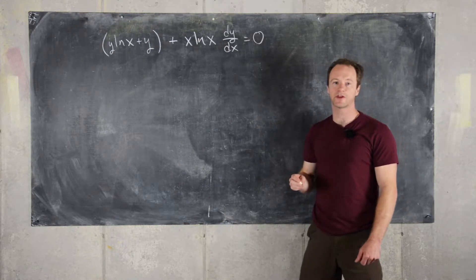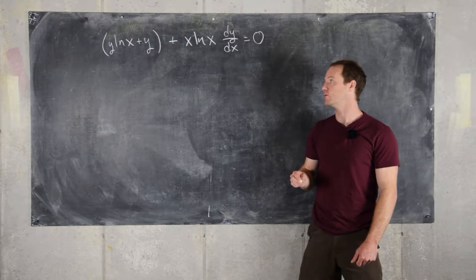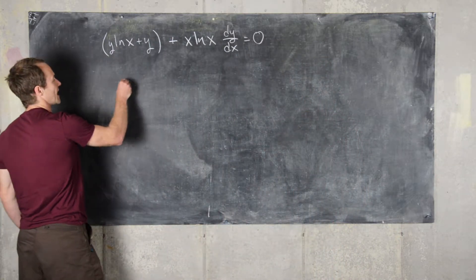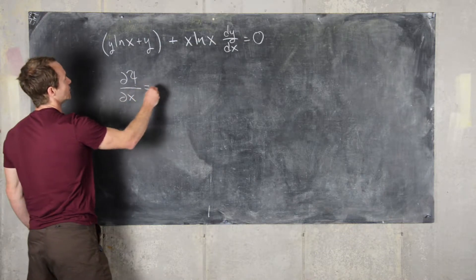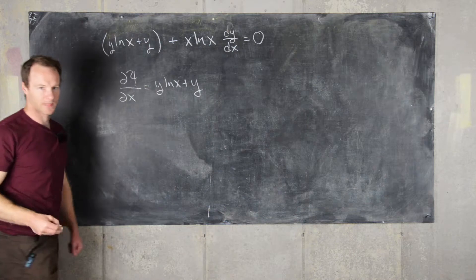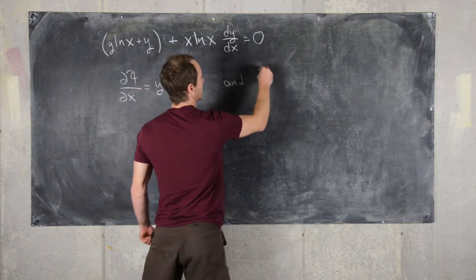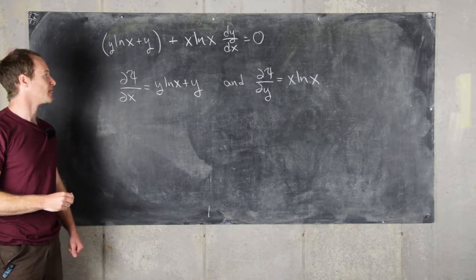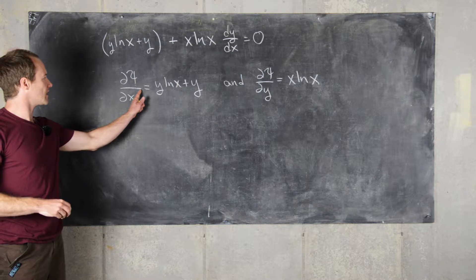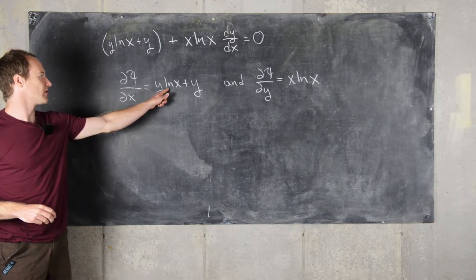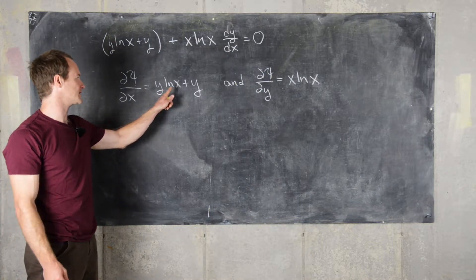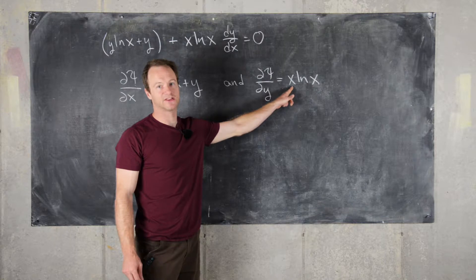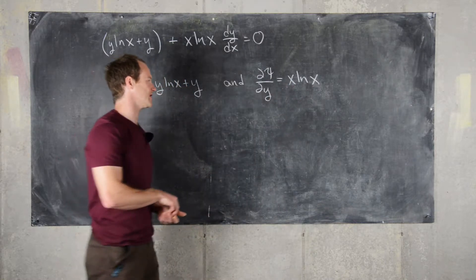We determined that this is an exact differential equation and laid out a blueprint: we need a function Psi so that d Psi/dX equals Y natural log of X plus Y, and the partial of Psi with respect to Y equals X natural log of X. We could take the anti-derivative of the first with respect to X, but the anti-derivative of natural log is tricky — it requires integration by parts. Instead, we can take the anti-derivative of the second with respect to Y, since X natural log of X is just a constant, making that anti-derivative easy.